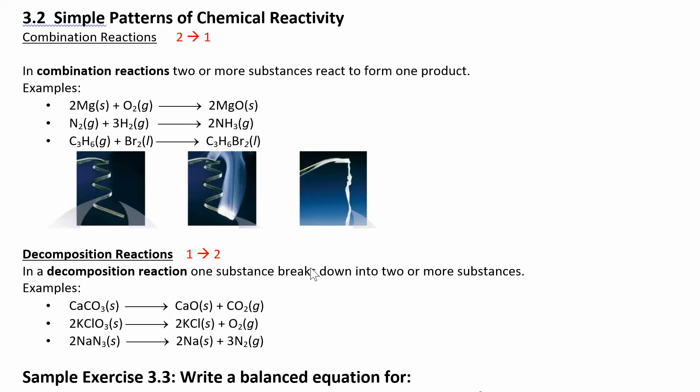Now that we know how to balance, we can start looking at different types of chemical reactions. We have three that we're going to look at: combination, decomposition, and combustion.